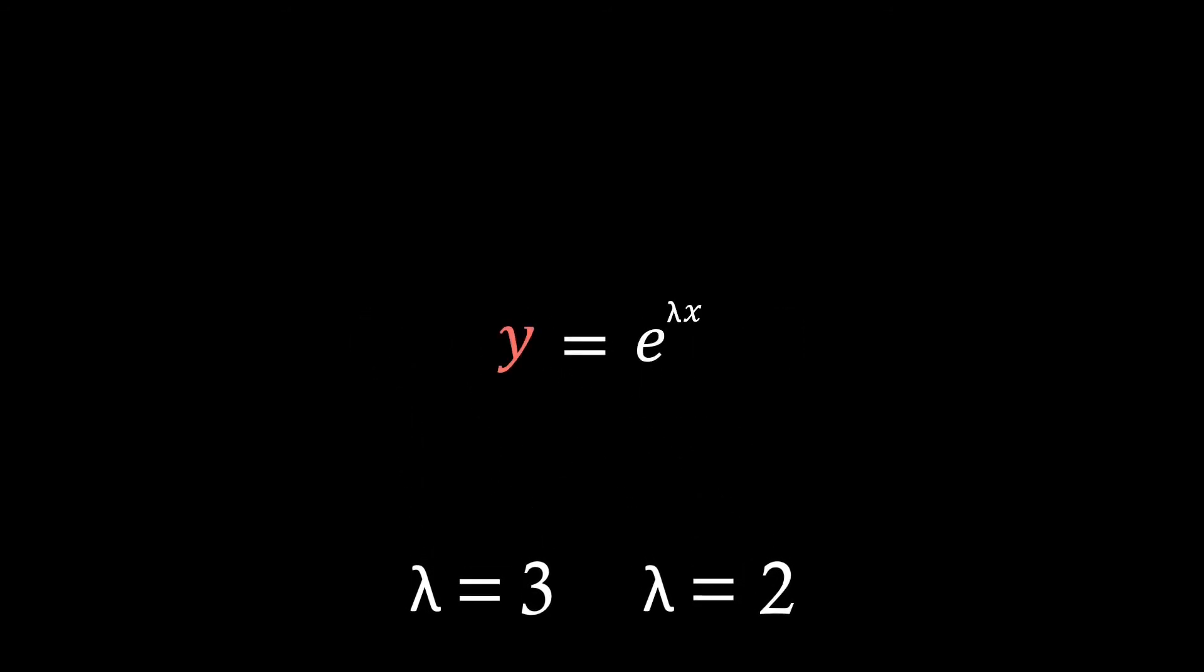Hence, we have the solutions that lambda equals 3, or lambda equals 2. Now just recall that y equals e to the lambda x, so therefore if we substitute both our lambda values in, we'll have two solutions.